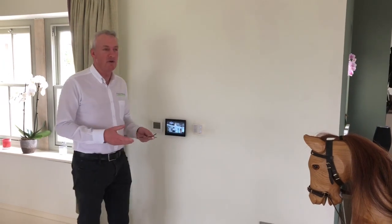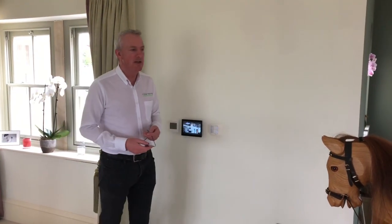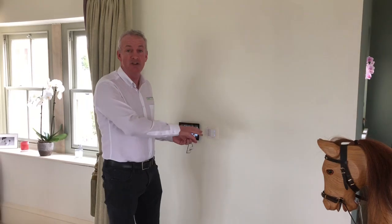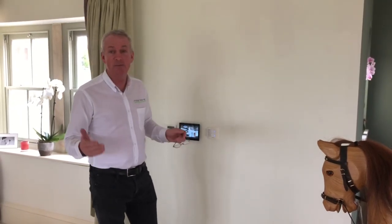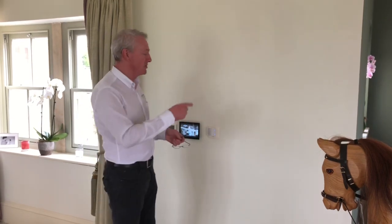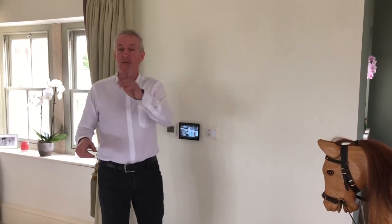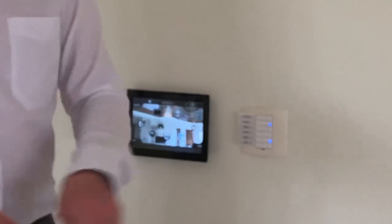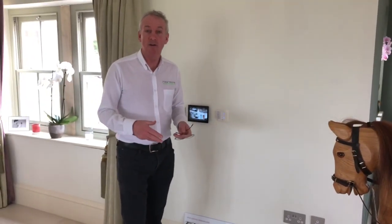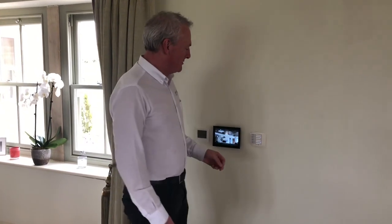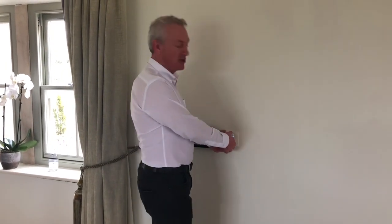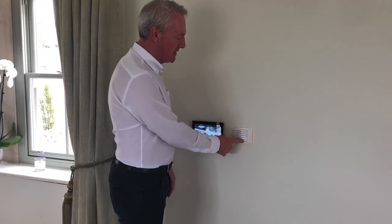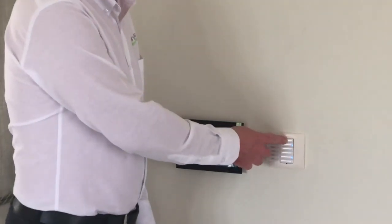Another benefit of controlled lighting when building from scratch is you don't have to think about where to put the light switches, because with traditional wiring it's rigid — you have to decide in the first fix stage where you want to control which lights. With this system, it doesn't really matter because any one of these keypads can control any circuit in the entire house. You can always think about it later.